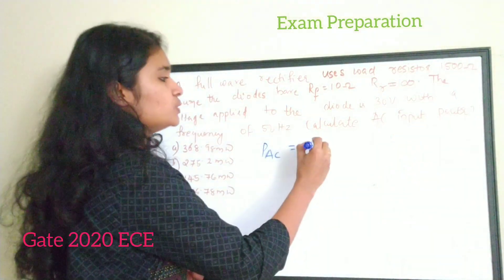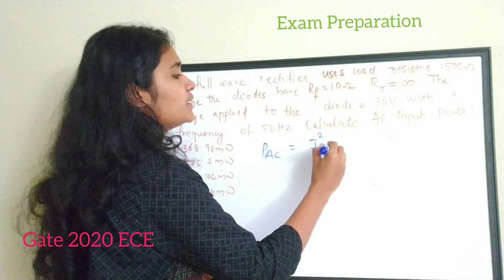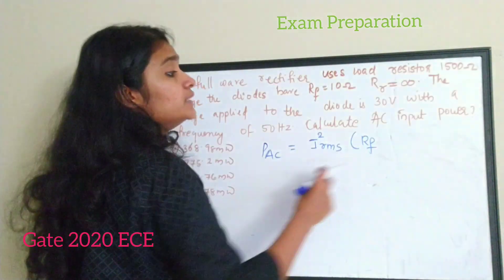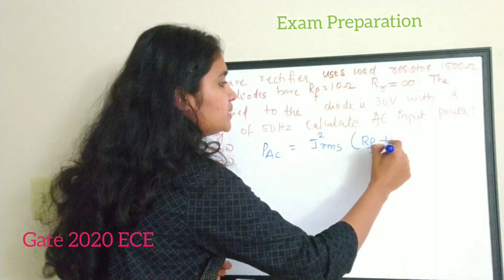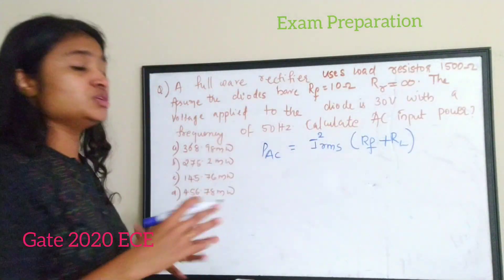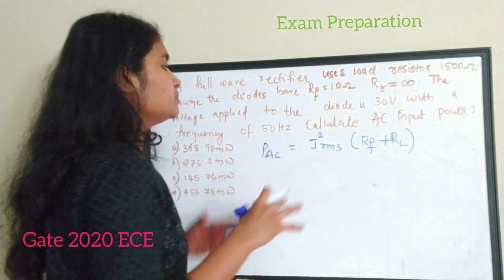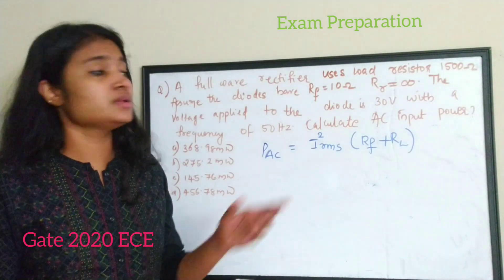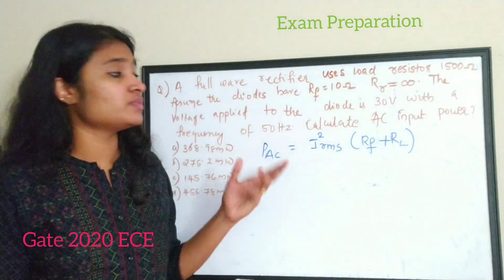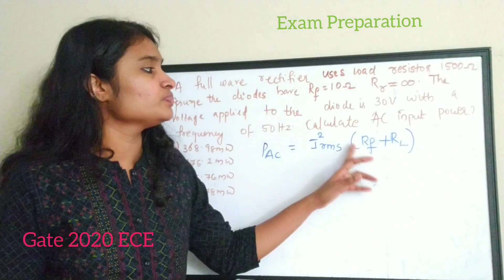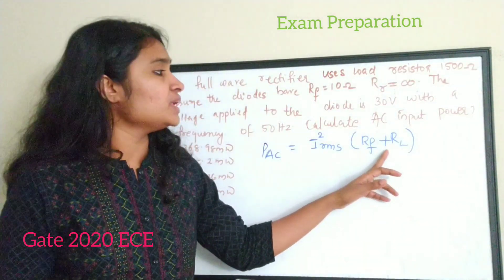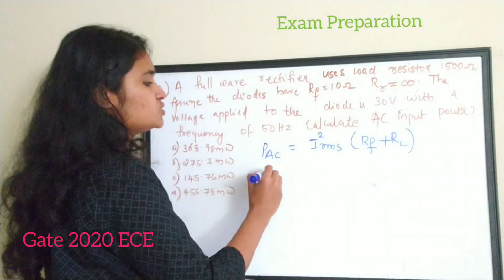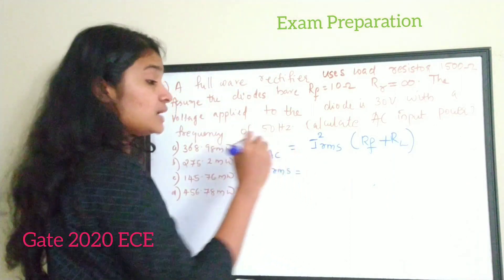We have to find the AC input power, P_ac or P_input. The equation for AC input power is: P_ac equals I²_rms times (r_f + R_L), where r_f is the diode forward resistance and R_L is the load resistance. We are calculating the input power as the input RMS current squared times the sum of the forward resistance of the diode plus the load resistor.